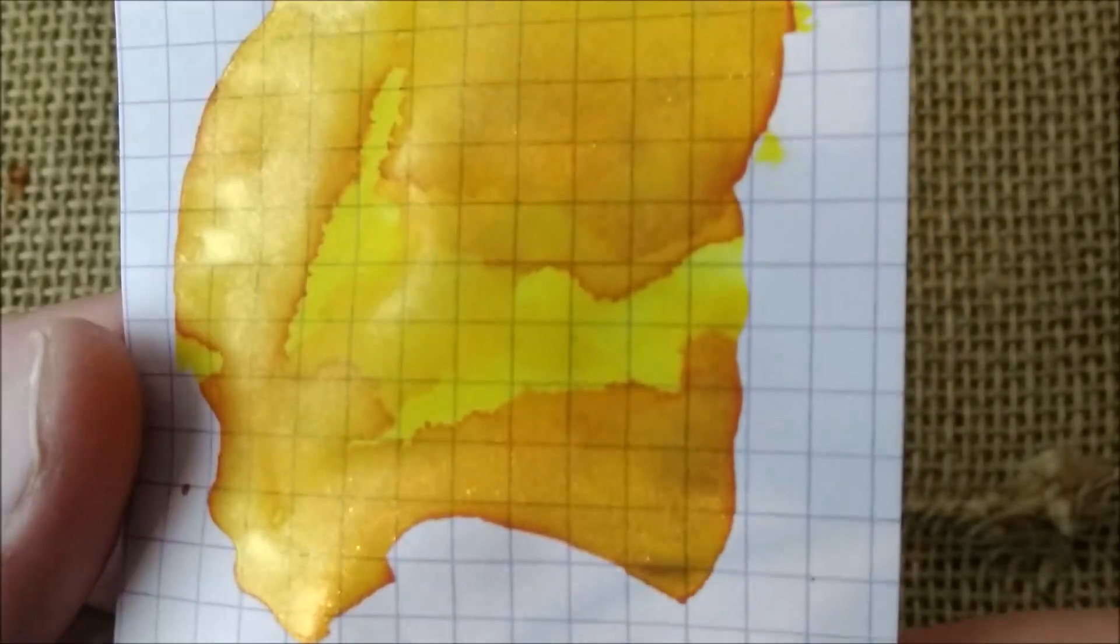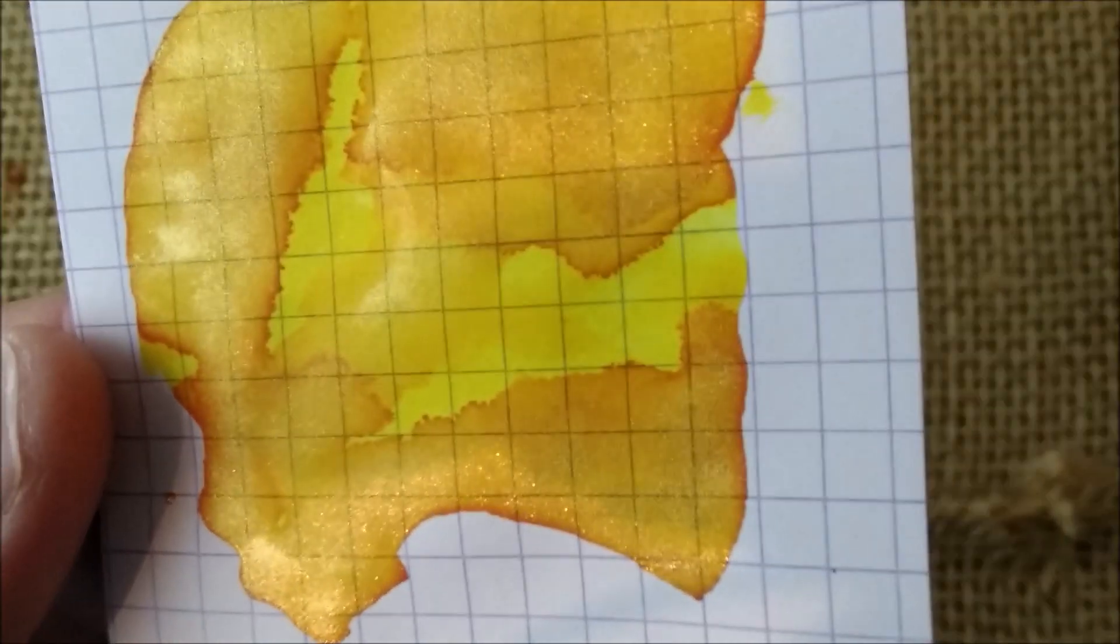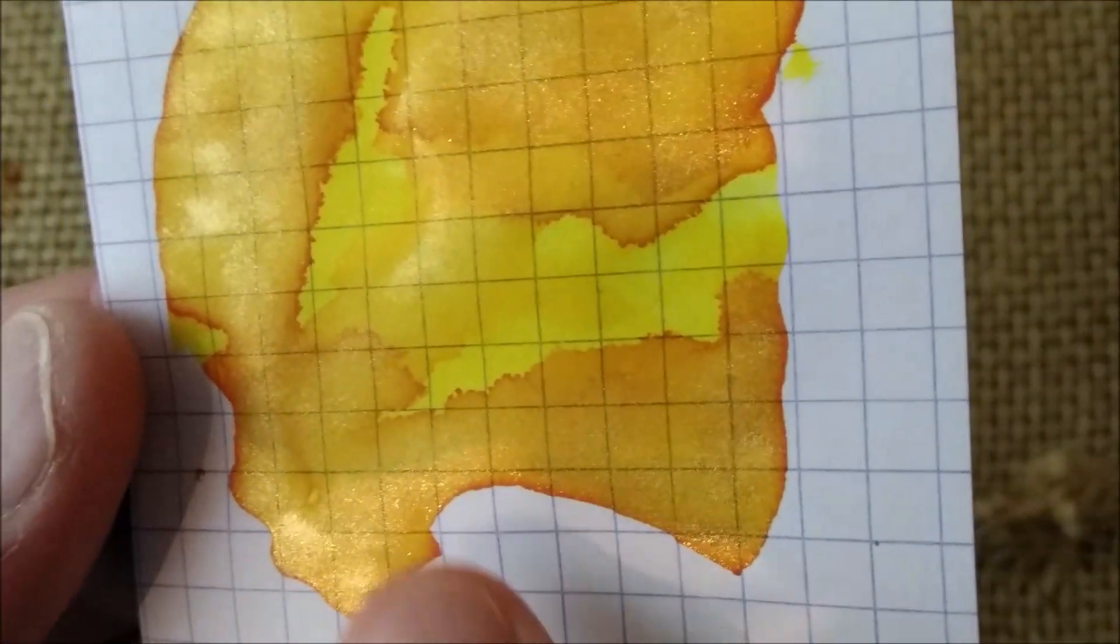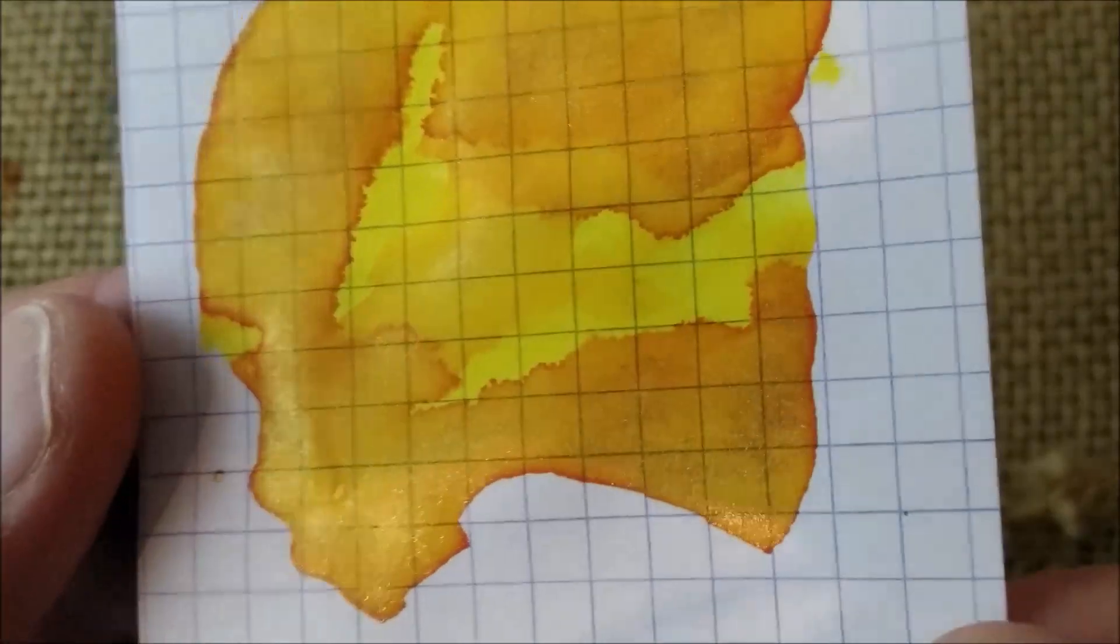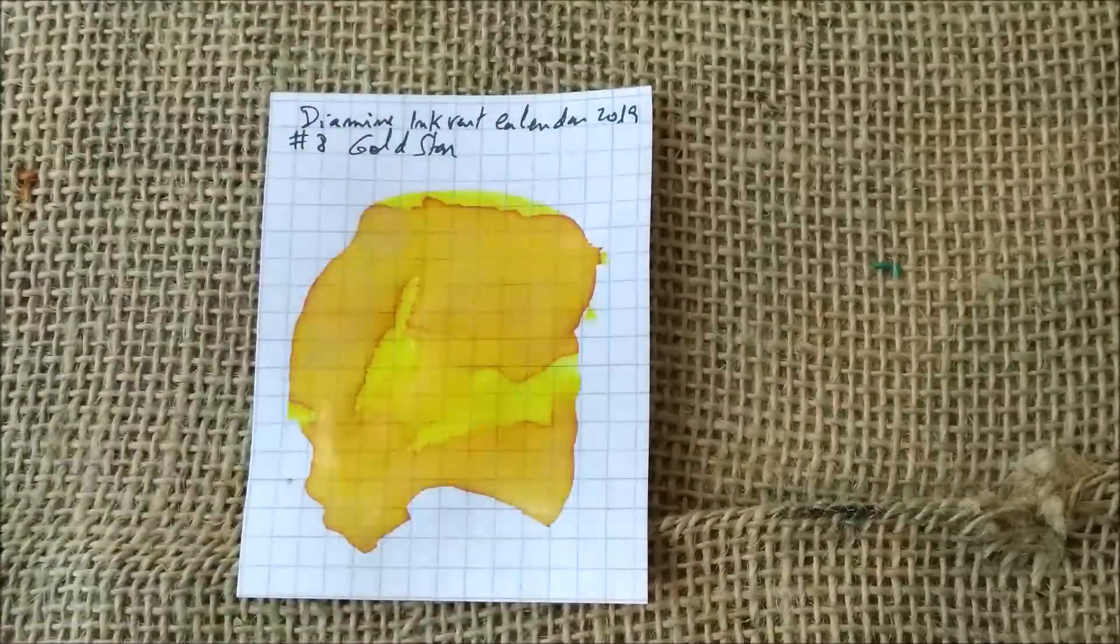And if we do it like this you can see all the glitter. This is a shimmer ink as I showed you. I think you can see here on the bottom lots of glitter. This is the swatch. Now, which pen did I choose to go with this ink?